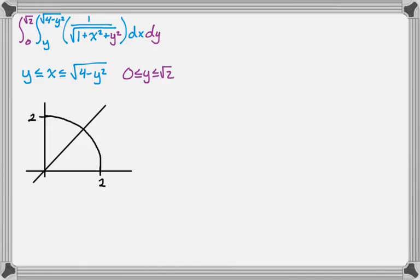But then y has to be between 0 and radical 2. So if you look at the x-bounds, y has to be on the left and the circle part has to be on the right, so there's really only this little region that we're dealing with.